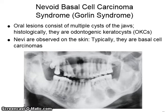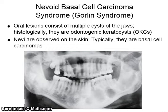Nevoid basal cell carcinoma, or Gorlin syndrome, shows oral lesions which consist of multiple cysts of the jaws. Histologically, they are odontogenic keratocysts. Nevi are also observed on the skin — typically, they are basal cell carcinomas.